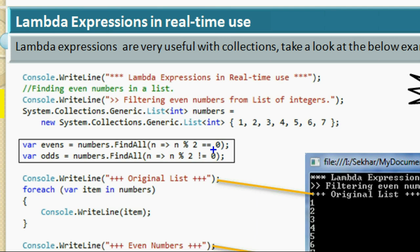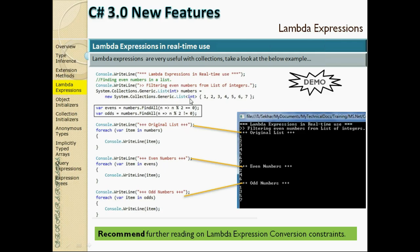Going forward, you will not see the delegate keyword explicitly. For example, 'numbers' is a list of int, and the list has a method called FindAll which takes a delegate that accepts an expression. We'll see more of that in detail in various examples.